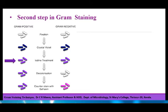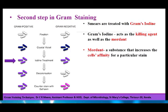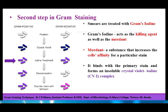During the second step, after washing the smear with running tap water, the smears are treated with Gram's iodine. This reagent acts as a fixing agent as well as the mordant. A mordant is a substance that increases the cell's affinity for a particular stain. It binds with the primary stain and forms an insoluble crystal violet-iodine complex. All cells appear violet or purple at this stage.